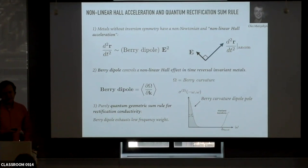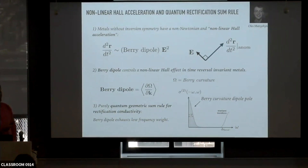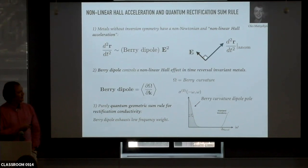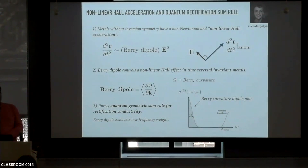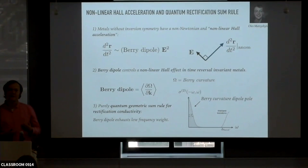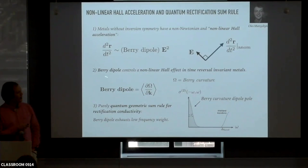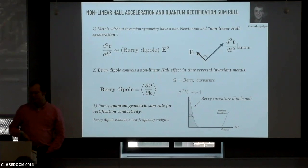I want to convince you that in metals that lack inversion symmetry, there is a correction to Newton's law, according to which the acceleration of the electron liquid scales not with the linear applied force, but instead with the square of the applied force or applied electric field. This correction—this acceleration—is always orthogonal to the applied electric field, so it's a kind of Hall acceleration. It's controlled by the Berry curvature dipole, which is the gradient of the Berry curvature with respect to momentum over the occupied states. This nonlinear Hall acceleration is behind the nonlinear Hall effect that can be present in time-reversal invariant materials.